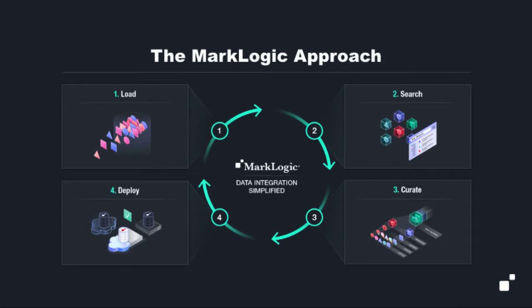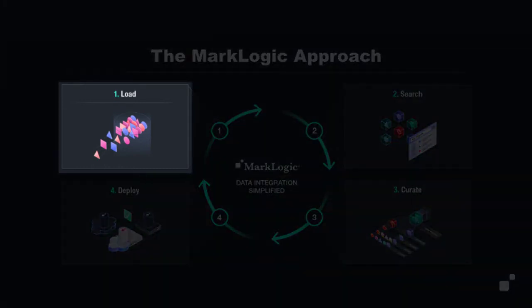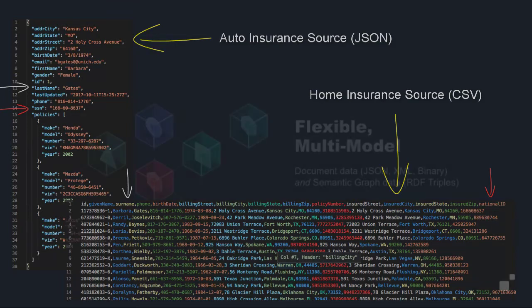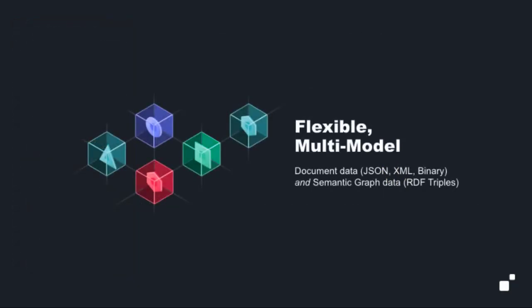In a MarkLogic DataHub project, you'll go through iterations of data load, discovery, modeling, curation, and use. So let's start with loading data. Here we have two different sources of customer data for both home and auto insurance. And you can see that while there are some common data properties across both sources, they come from different systems and have different underlying schemas. It's easy for a data engineer on the team to load different sources of data using Hub Central because of the multi-model data management capabilities of MarkLogic.